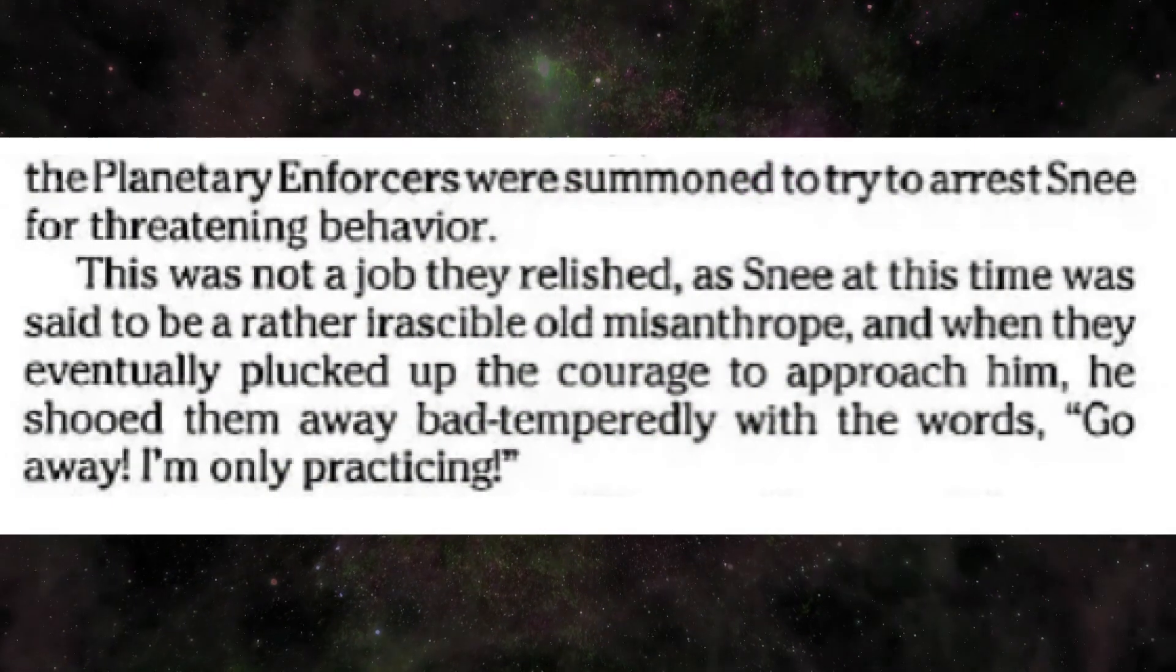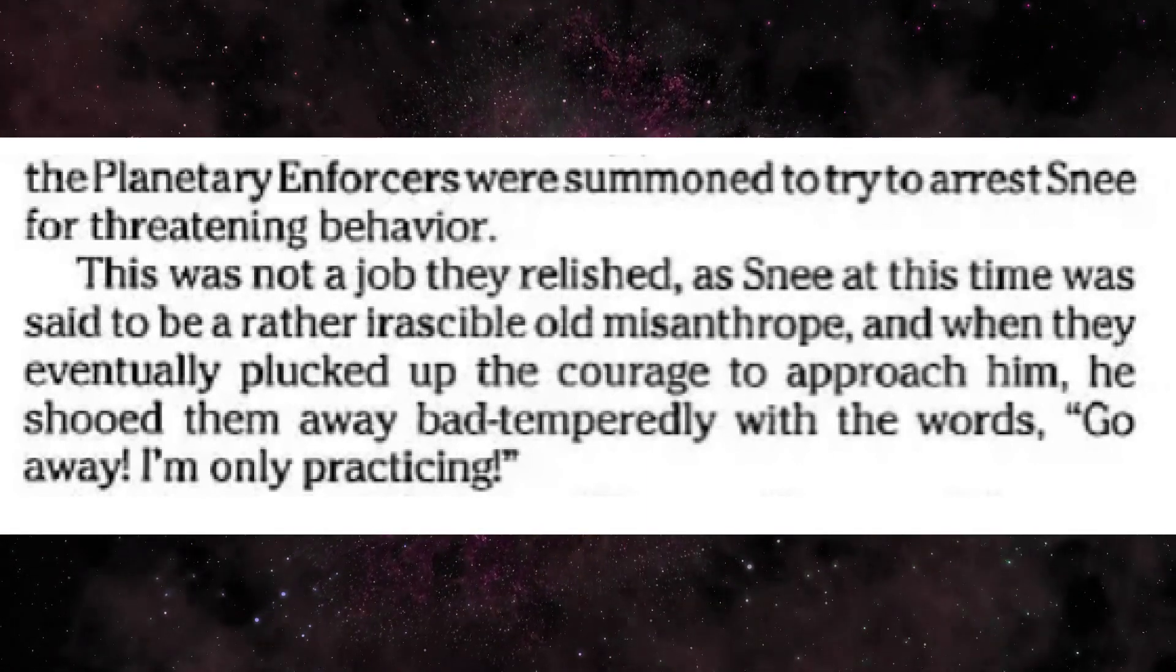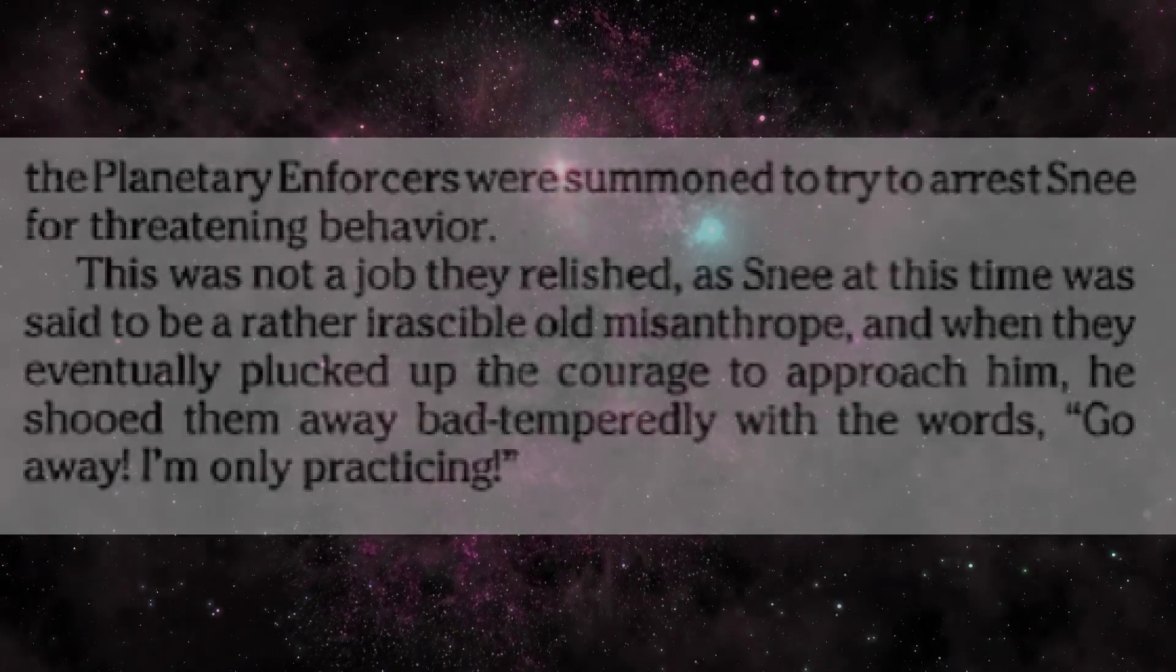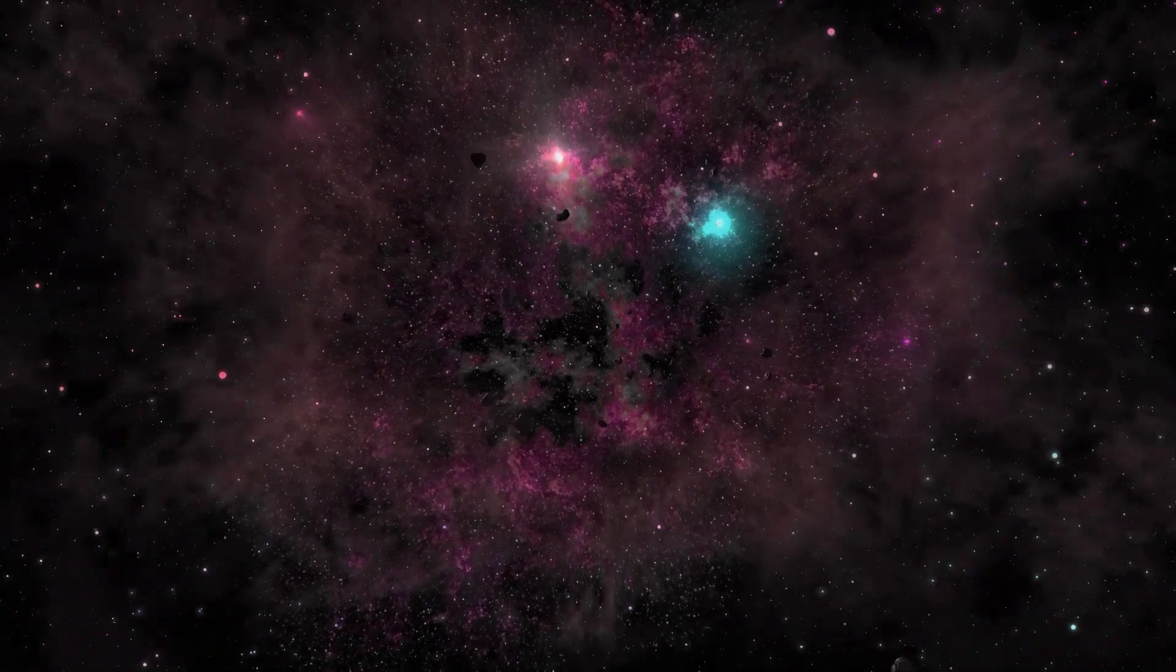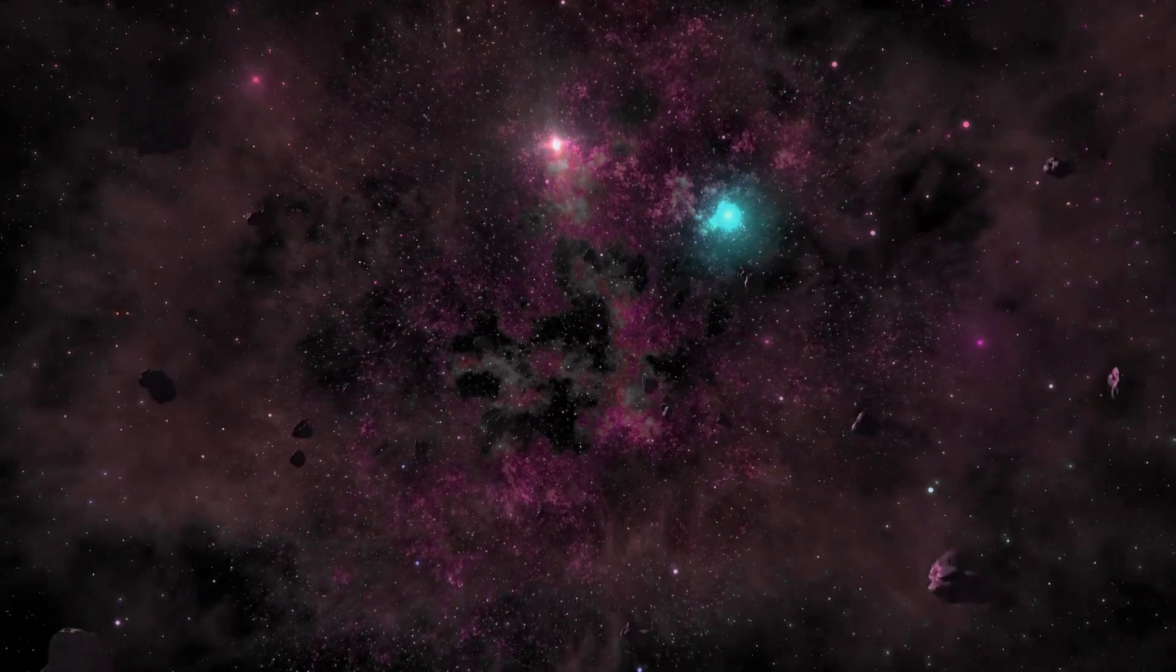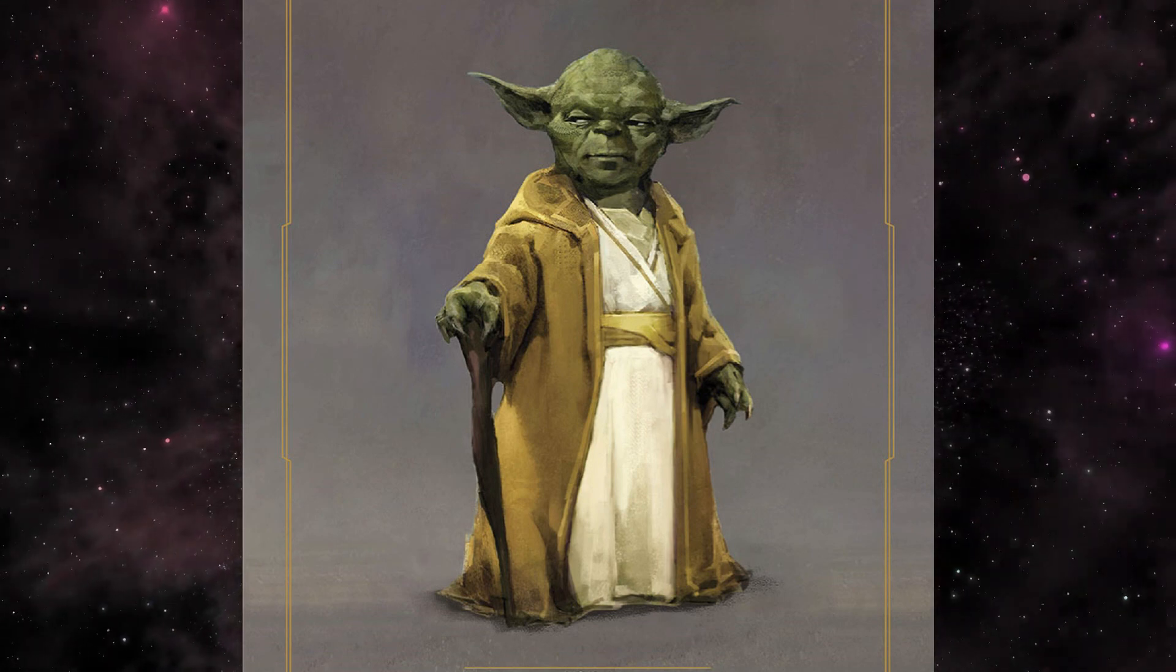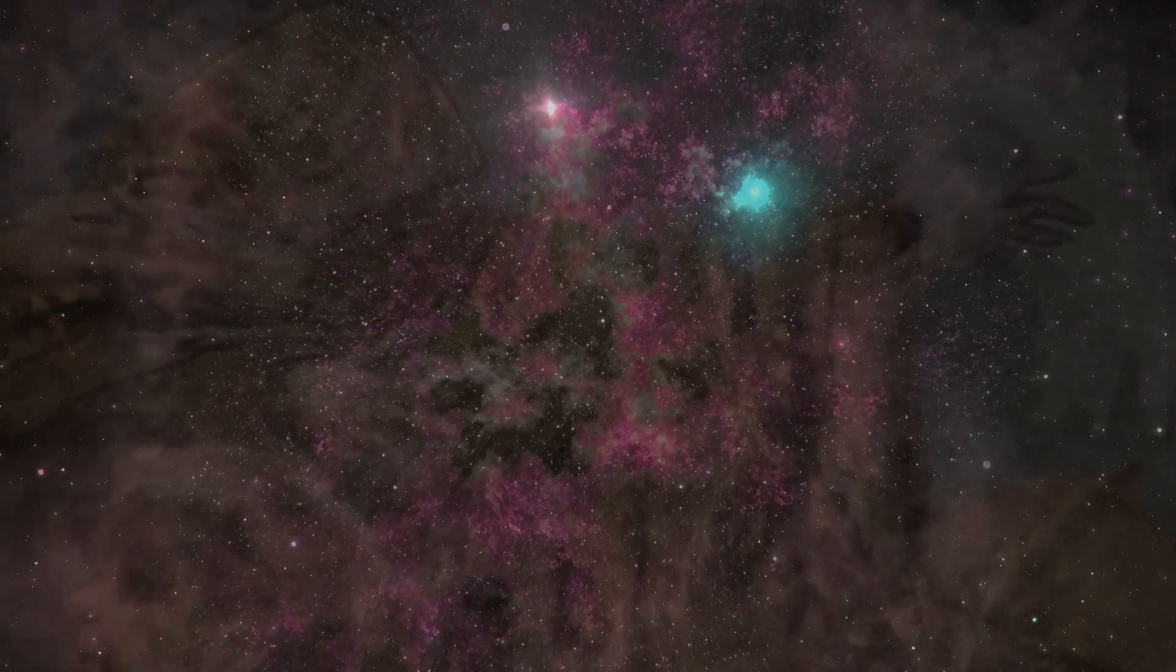Not only this, but Snee also bad-temperedly shooed the planetary enforcers away whilst he was lifting the seven Munter stones above his head, saying 'go away, I'm only practicing.' This unprecedented feat was only Snee practicing. Now just imagine what he could do in a state of deep meditation, like Faye Coven, and possibly Yoda when he was 700, or even the telekinetic abilities achievable to him should he actually be in a serious situation and not just practicing.